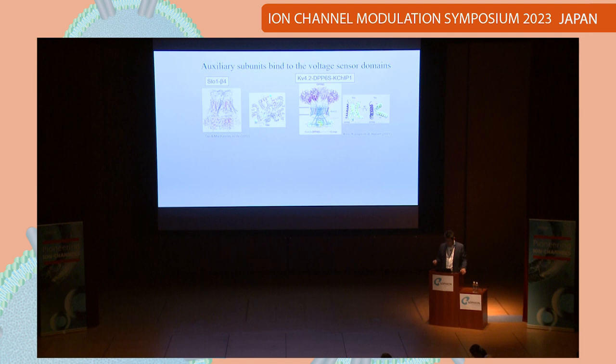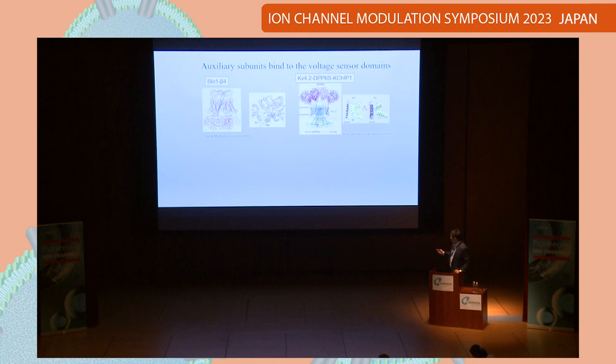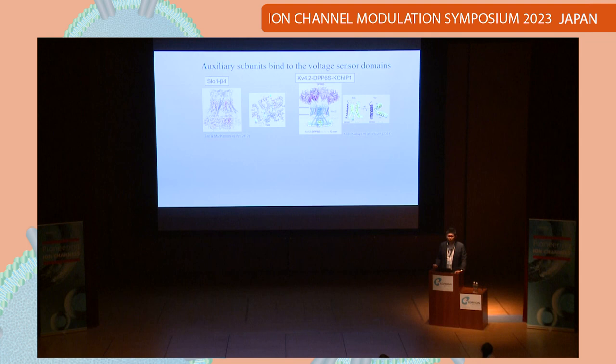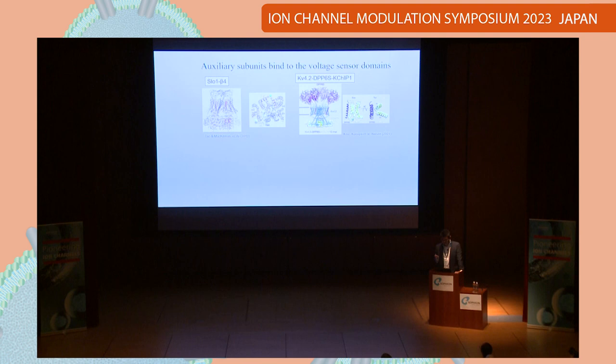This is the KV4.2 complex, done by Kise and Kaseya — Kaseya is our lab member — in collaboration with the Nureki lab at the University of Tokyo. KV4 has two kinds of auxiliary subunits: one is KChIP, an intracellular protein, and another is DPP. DPP is a single transmembrane protein with a very large extracellular side, and we found that DPP6 also binds to the S1 and S2 segments.